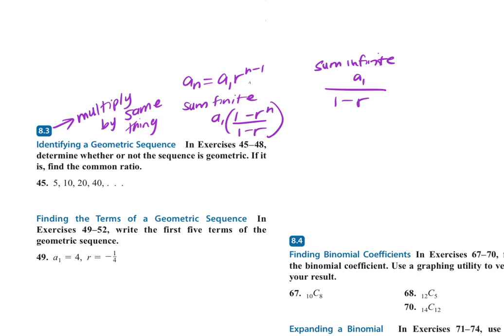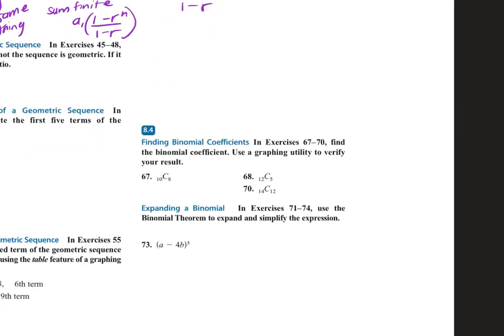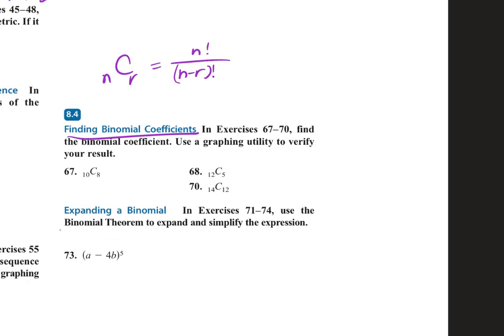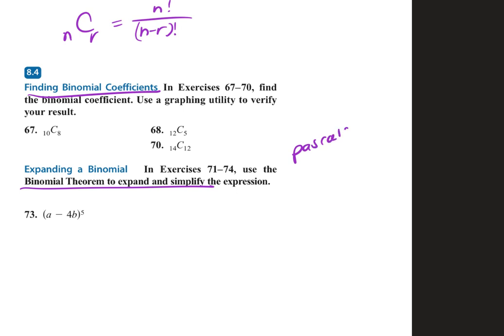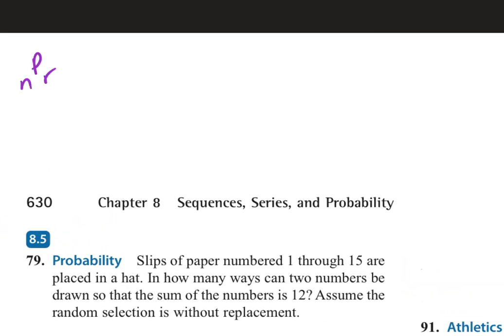Then we went to section 8-4, which was binomial coefficients — your C(N,R), which is N factorial over (N minus R) factorial times R factorial — and your binomial expansion, where you want to know Pascal's triangle. Section 8-5 started probability. You need to know P(N,R) for permutations, and you need to know the difference between a permutation and a combination. In a permutation, order matters; in a combination, it does not.